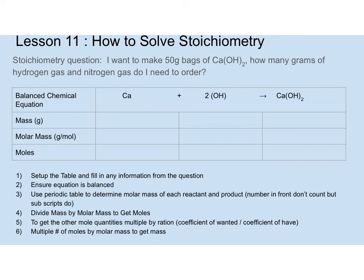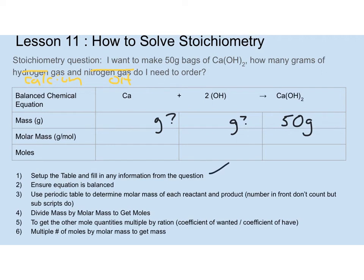Let's do another question. The stoichiometry question: I want to make 50-gram bags of calcium hydroxide. How many grams of calcium and hydroxide do I need to order? I want to find the grams of the reactants needed to make 50 grams of calcium hydroxide. First I set up my table — already done. Now I check that the equation is balanced: one calcium on each side, two hydroxides on each side — balanced.